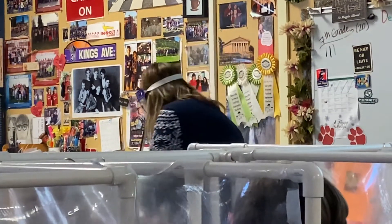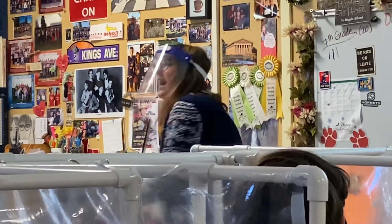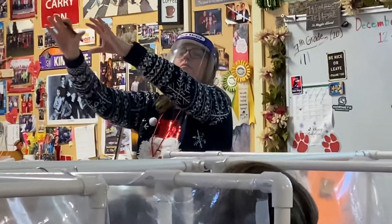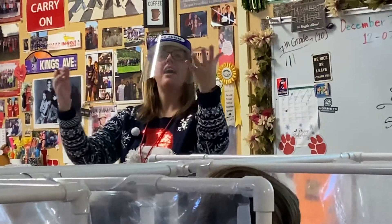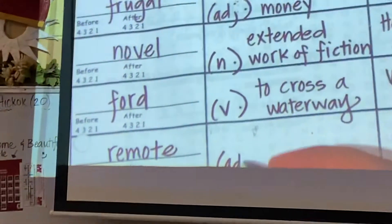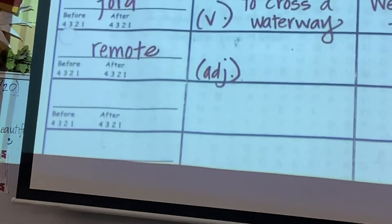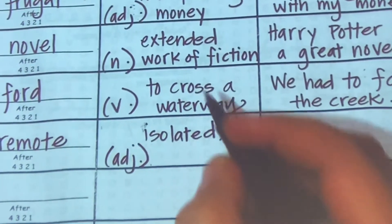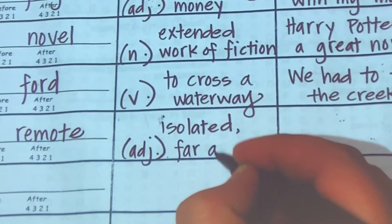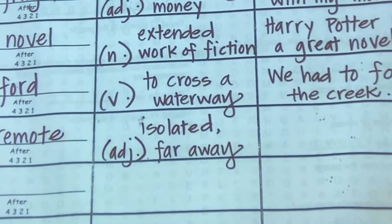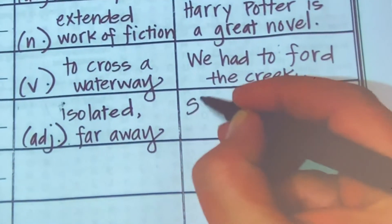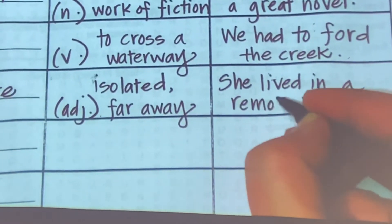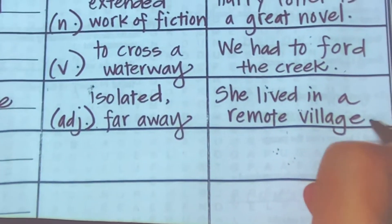Up next. Remote. Not talking about the thing that is used to change the channel, but the cabin was in a remote location. What does that mean? Remote. Tyler. Like, no cell phones. It's not like anything. Inaccessible. Good. Isolated. Off the grid. How about, she lived in a remote village.